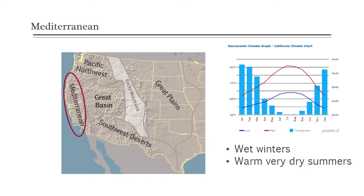Moving south into California, the Mediterranean climate looks very much like the Pacific Northwest — wet winters, very little rain in July and August. But it is quite a bit hotter than the Pacific Northwest: in the Pacific Northwest we might have highs in the 70s and 80s, but in California they can certainly be in the 90s or 100s. So very warm, dry summers and wet winters define a Mediterranean climate.